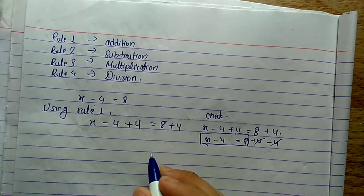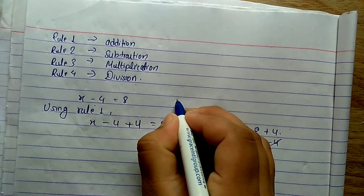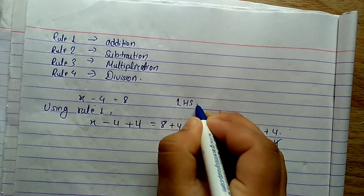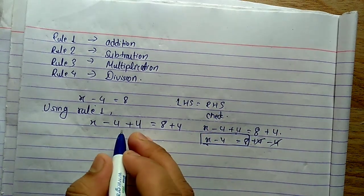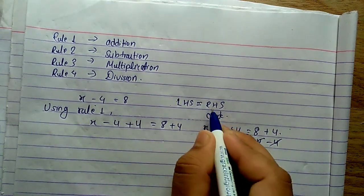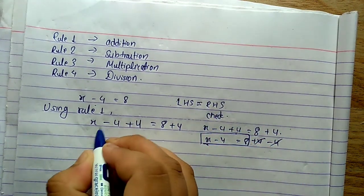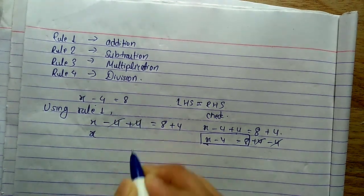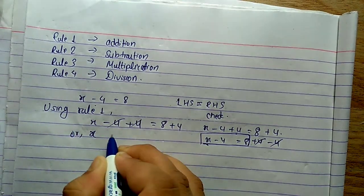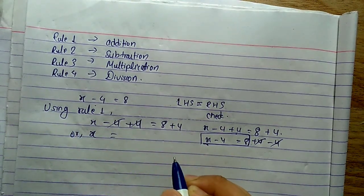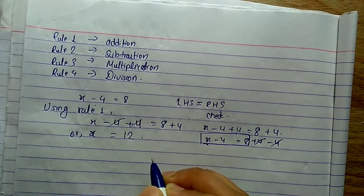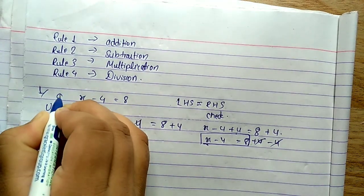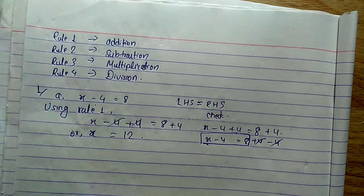We are doing this to find the value of x by making LHS equal to RHS — the left-hand side must equal the right-hand side. The plus 4 and minus 4 cancel out, leaving x equal to 8 plus 4, which is 12. So the value of x is 12. That is question number 1a.